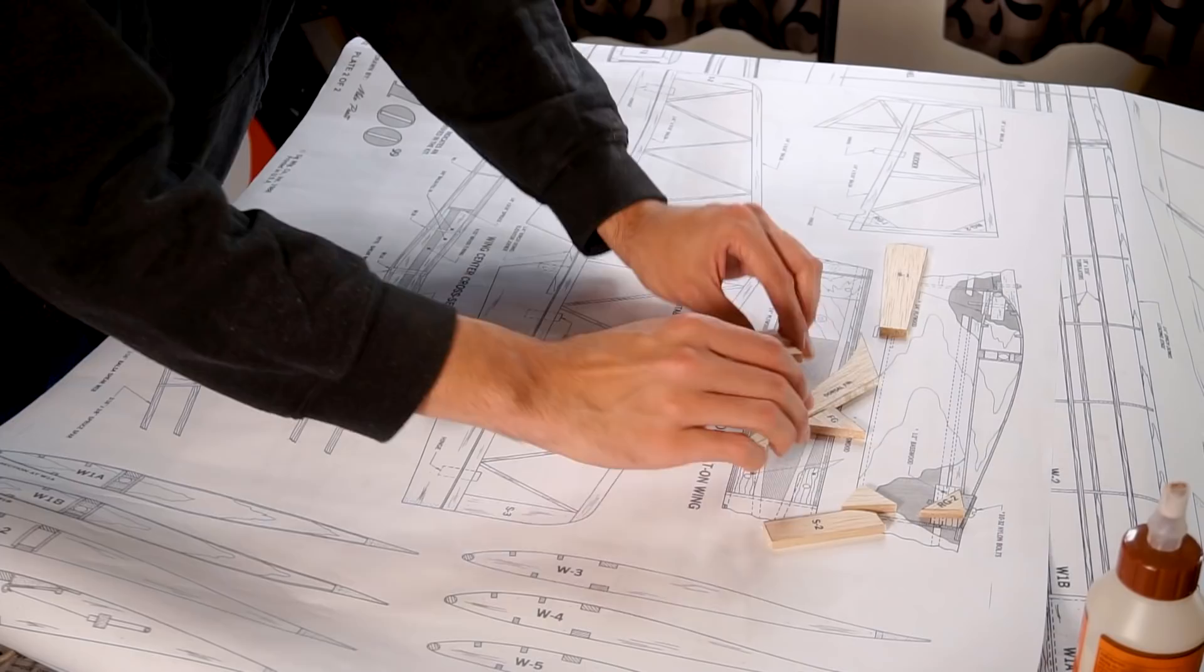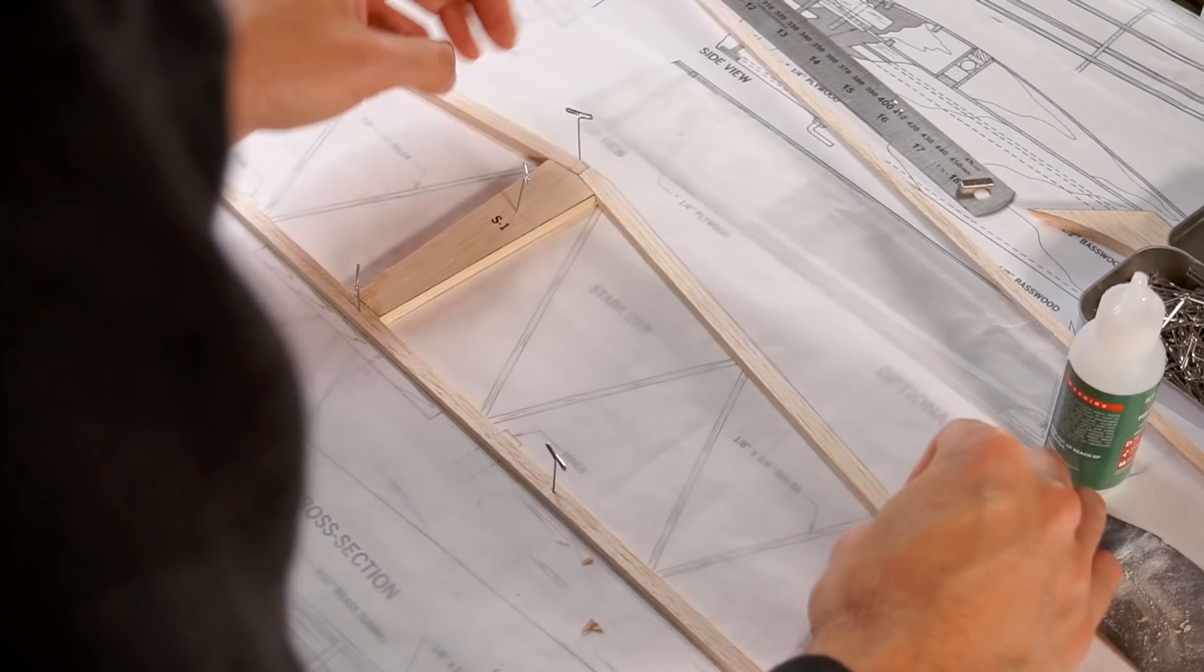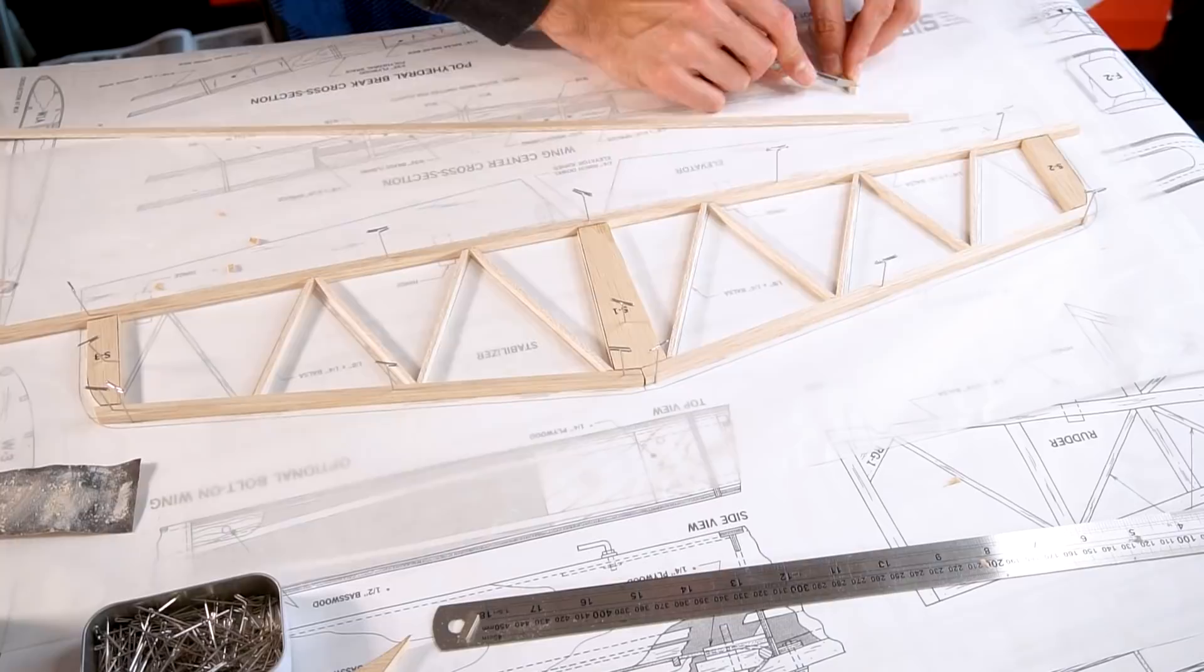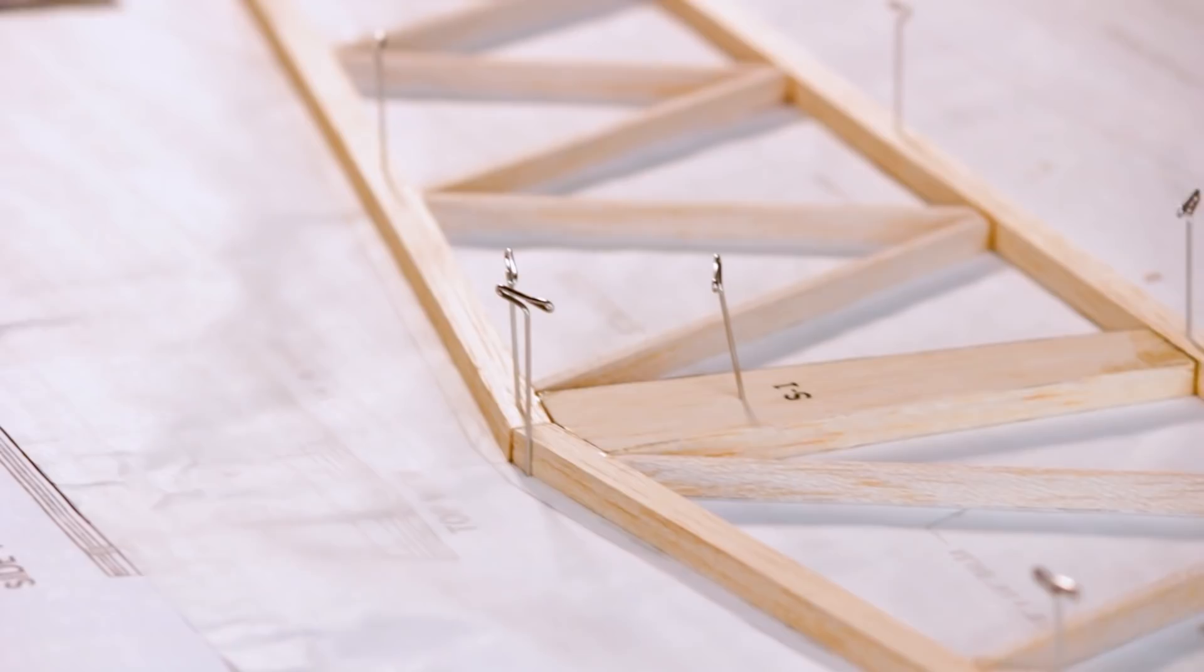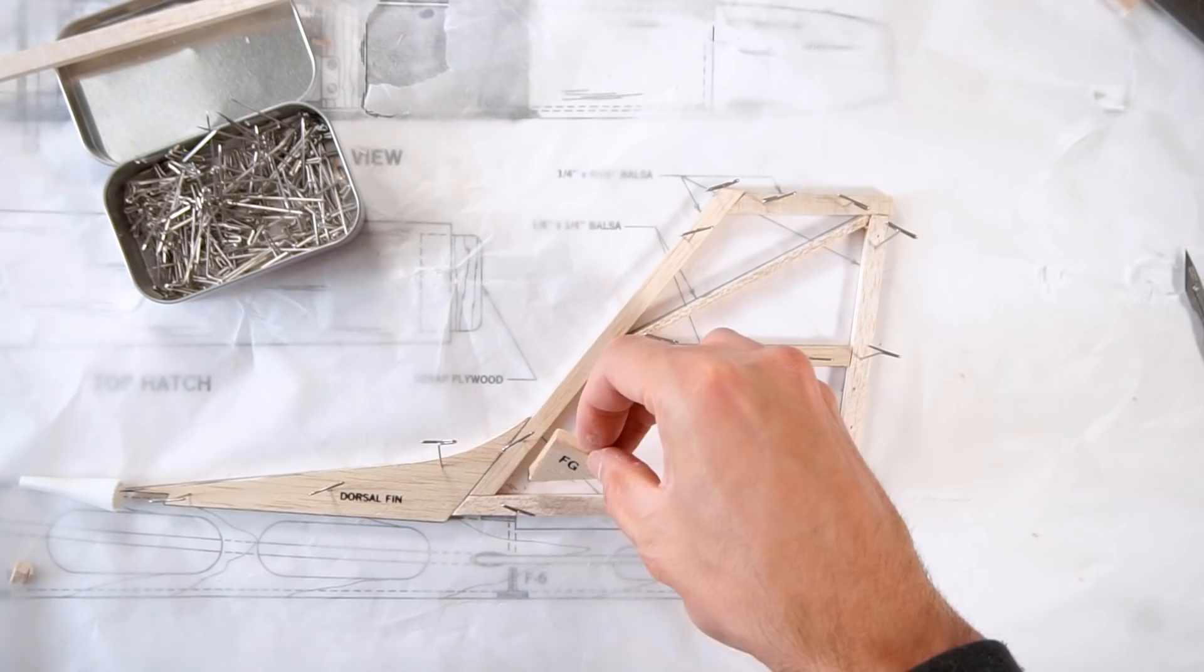The last parts we're going to build are the horizontal and vertical stabilizer with the elevator and rudder. These are the easiest parts for building because it's just following the plans, cutting some sticks, and gluing them in place.